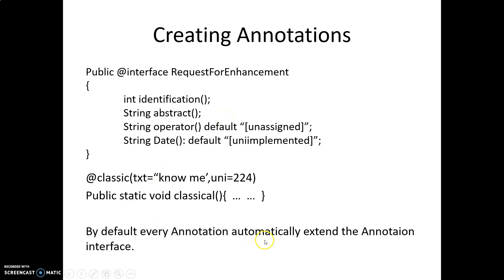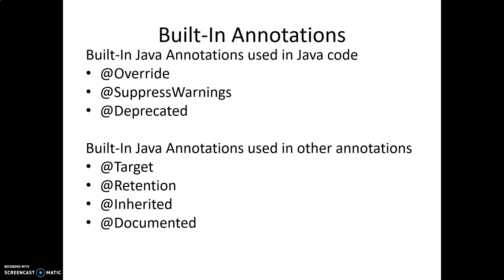By default, every annotation automatically extends the annotation interface. For example, if I use @Classic, we don't need to explicitly extend anything — annotation is the superclass for all annotations. Here the annotation @Classic has one variable called 'text' with a default value of 'no me', and 'uni' is a method with a default value of 224. Whenever this Classic annotation is used, the compiler is warned that this particular method may contain text and uni with those default values. That is how we create a user-defined annotation.